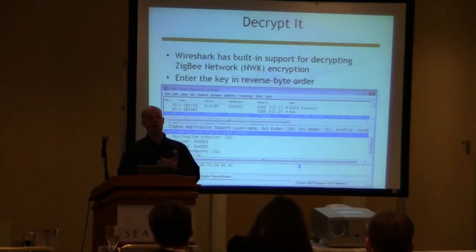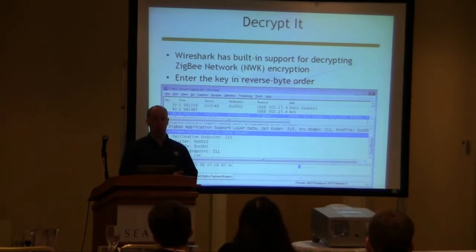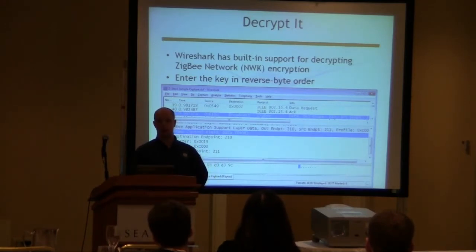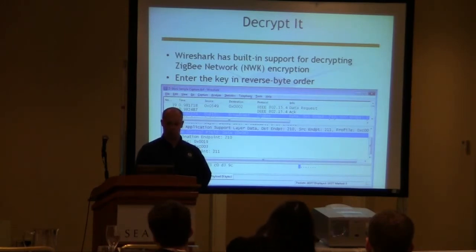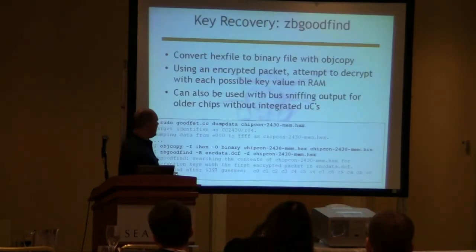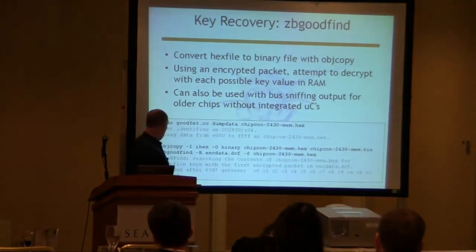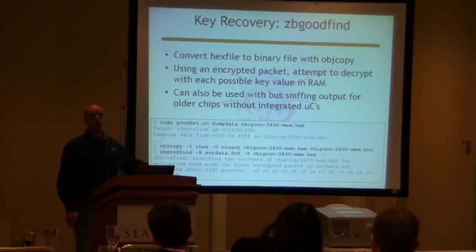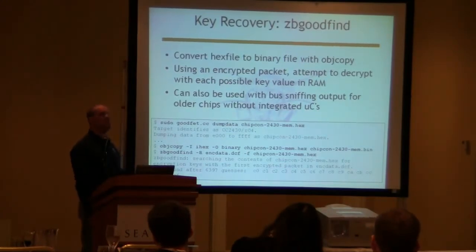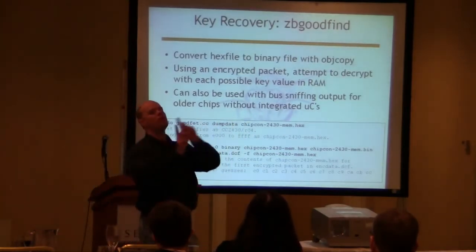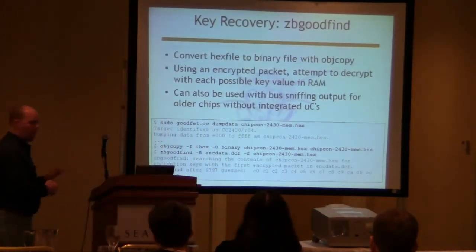Once we have the key information, Wireshark includes some Zigbee support now. You can use KillerBee, take a packet capture, open it in Wireshark, go to Edit > Preferences > Zigbee, enter the key, and it will decrypt the packets for you. Wireshark expects the key to be in reverse byte order. So if the key is C0, C1, C2, C3 ... CF, in Wireshark you would enter it as CF, CE, CD, CC, and so on. Make sure you enter the key in reverse order, because that's the way Wireshark expects it.